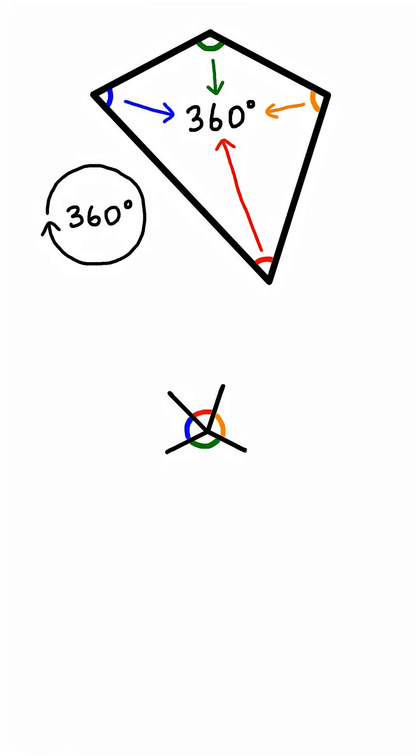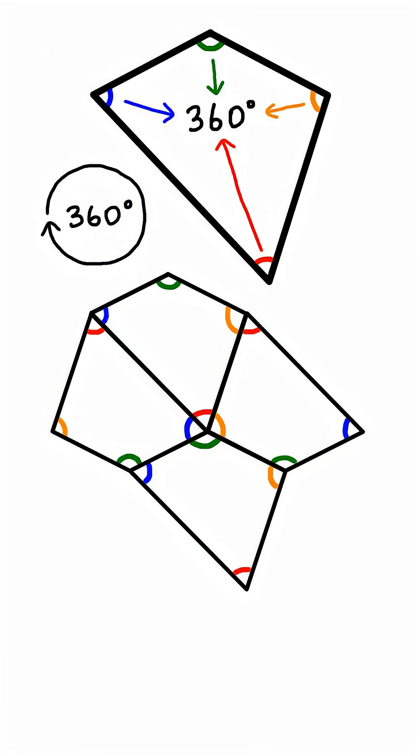360 degrees is a full rotation, so you can fit four quadrilaterals around a vertex without any gaps, as long as you use each angle once.